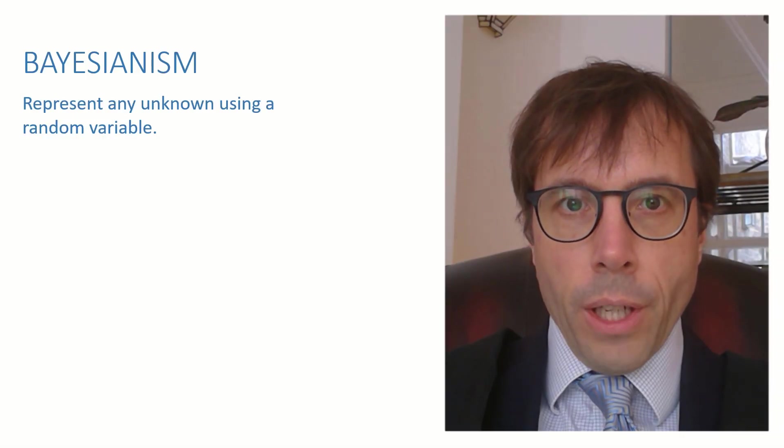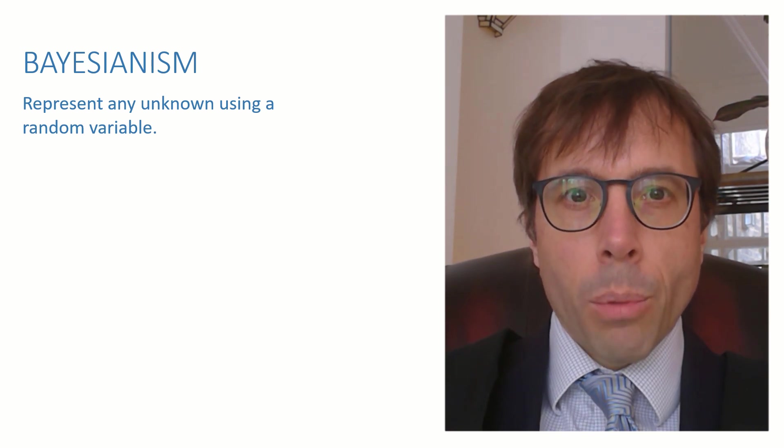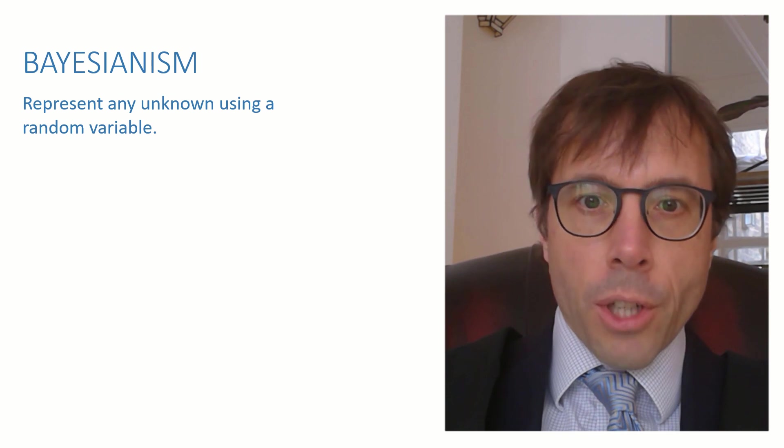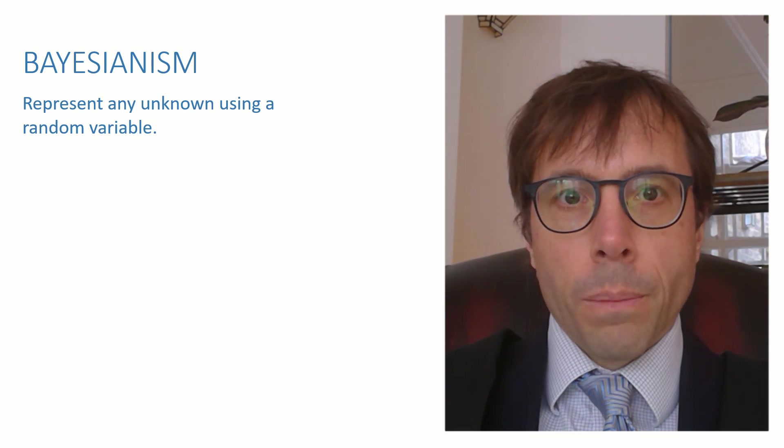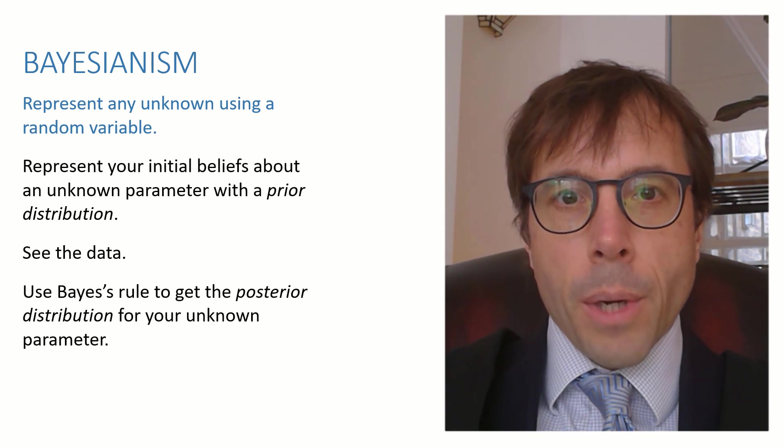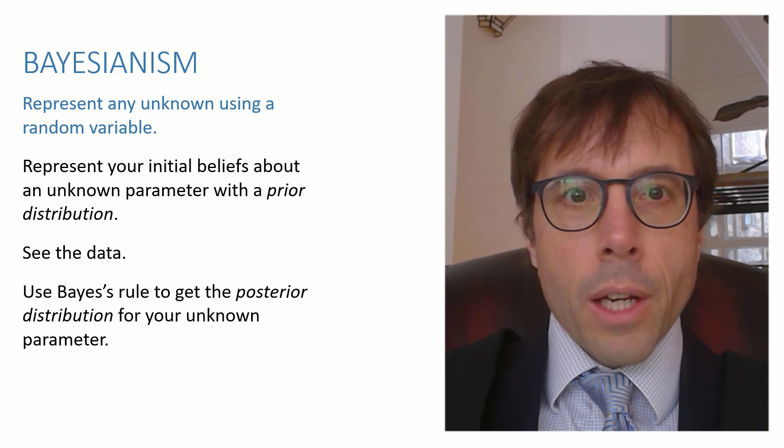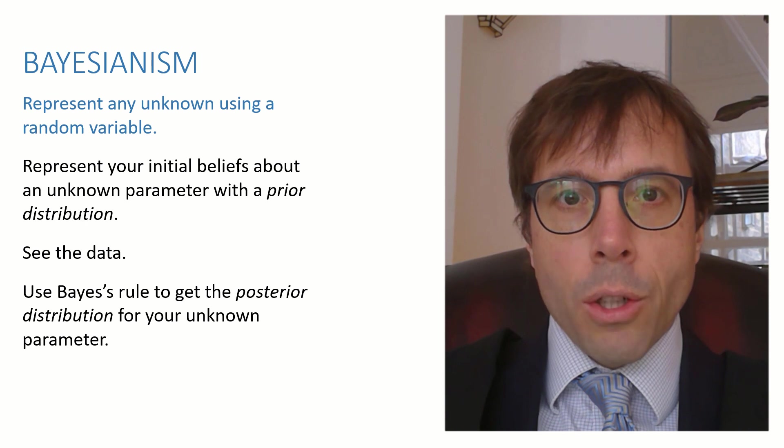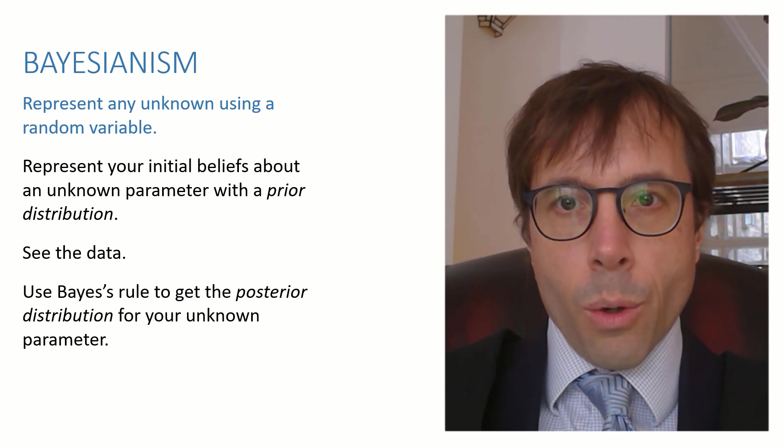The Bayesianist philosophy is that when you're modeling something about the world, you should represent anything you don't know by using probabilities. In particular, if you have a model with an unknown parameter, then you should represent it using a random variable. You should start out by declaring your prior belief about that parameter by stating its prior distribution. Then you see the data and you update your beliefs using Bayes' rule to get the posterior distribution for the unknown parameter.